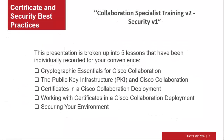This presentation is broken up into five lessons that have been individually recorded for your convenience. Cryptographic Essentials for Cisco Collaboration provides background on symmetric and asymmetric encryption, HMAC, digital signatures, and certificates. The Public Key Infrastructure and Cisco Collaboration covers the PKI and its relationship with a Cisco Collaboration deployment. Certificates in a Cisco Collaboration deployment answers who needs what certificates and why. Working with certificates focuses on how certificates are obtained and deployed. Securing your environment covers tasks associated with enabling HTTPS, TLS, and SRTP.